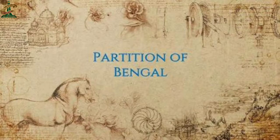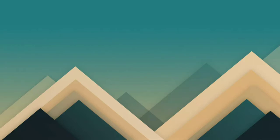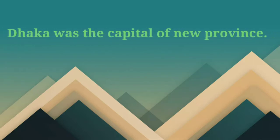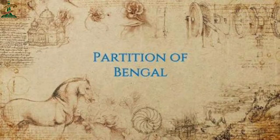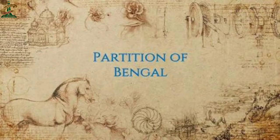On the suggestion of Lord Curzon, the British government divided Bengal into two parts in 1905, and Dhaka was the capital of the new province. Muslims were very happy with this division because in East Bengal, Muslims were in large numbers. But on the other hand, Hindus were not in the mood to accept this and did not accept the division of Bengal.